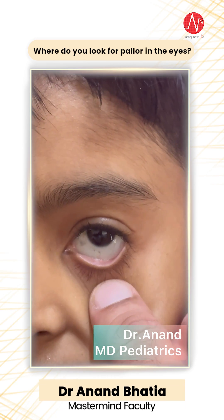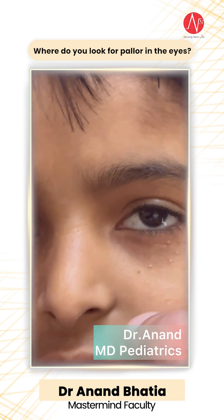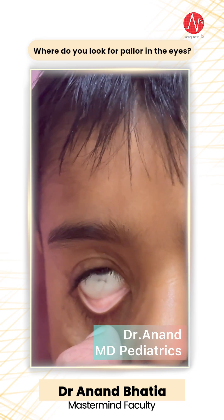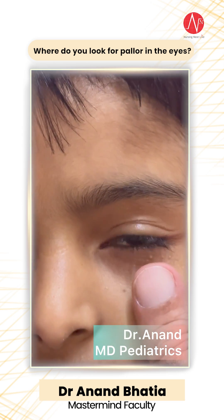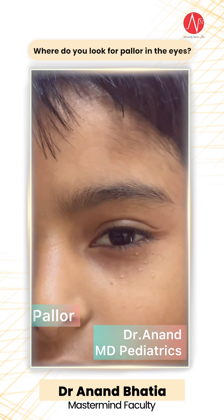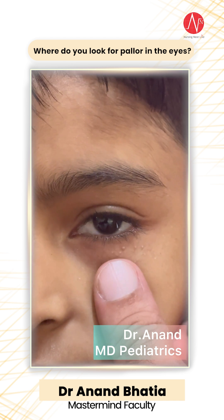Welcome to Pediatrics by Dr. Nana — Clinical Teaching: General Physical Examination. Today we are checking for pallor, a very important exam question. Pallor is the paleness of the skin or mucous membrane, usually due to a diminished number of circulating red cells, which results in anemia. Now, where do you look for pallor?